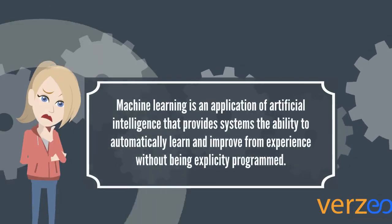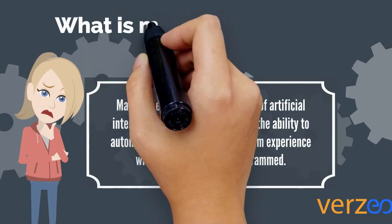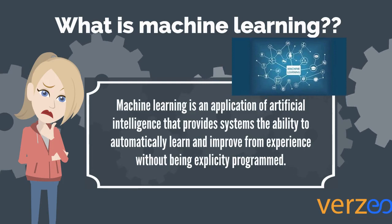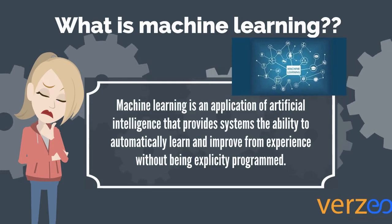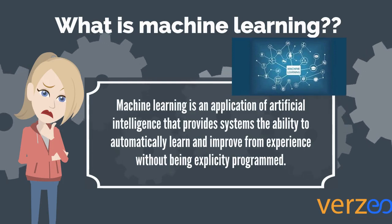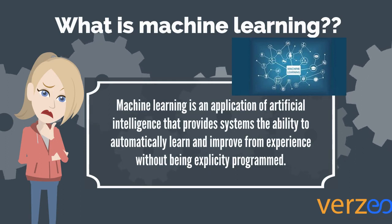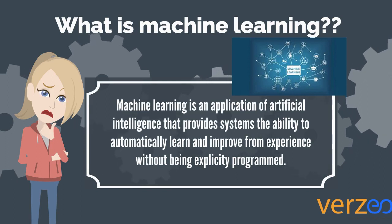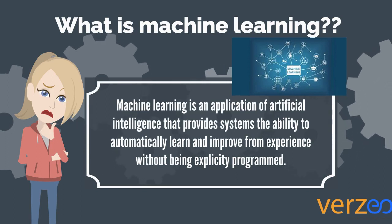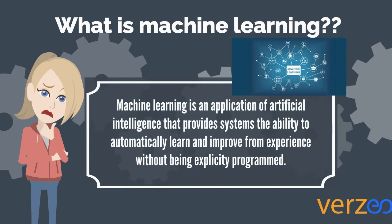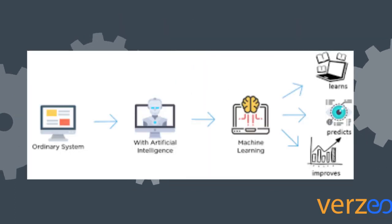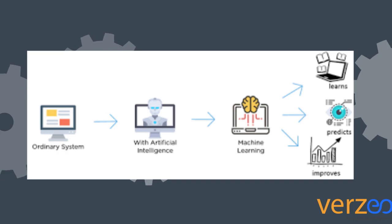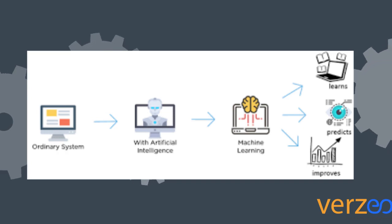So, what exactly is machine learning? Machine learning is an application of AI that provides systems the ability to automatically learn from experience without being programmed. Take an ordinary system and add artificial intelligence to it — give the computer the ability to think on its own. That is what machine learning basically does.